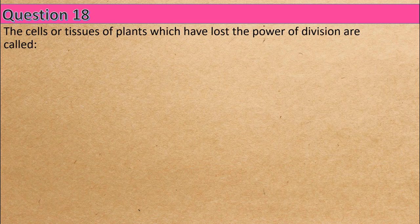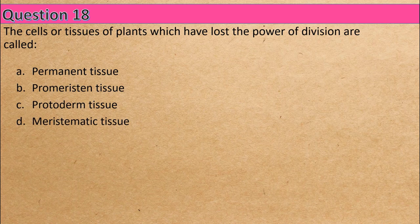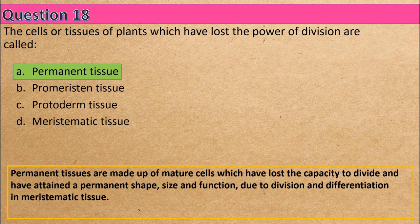Question 18: The cells or tissues of plants which have lost their power of division are called — Option A: permanent tissue, Option B: promeristem tissue, Option C: protoderm tissue, Option D: meristematic tissue. The correct answer is Option A: permanent tissue.